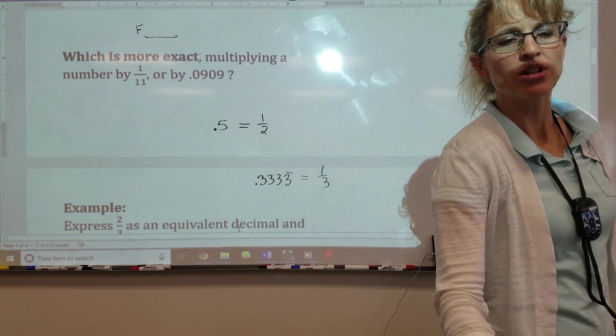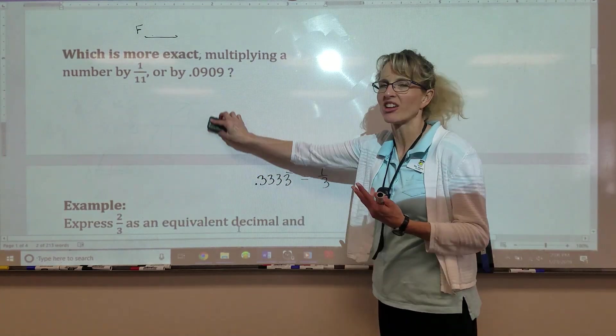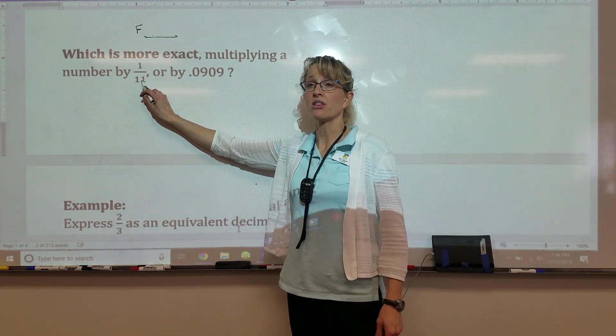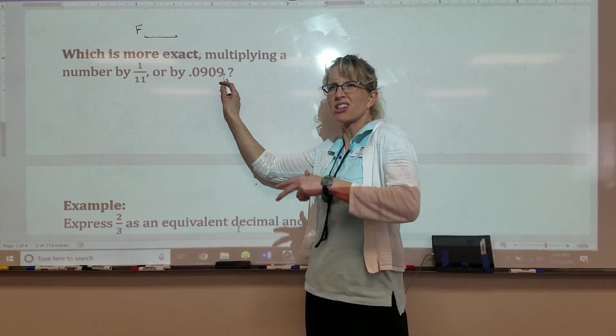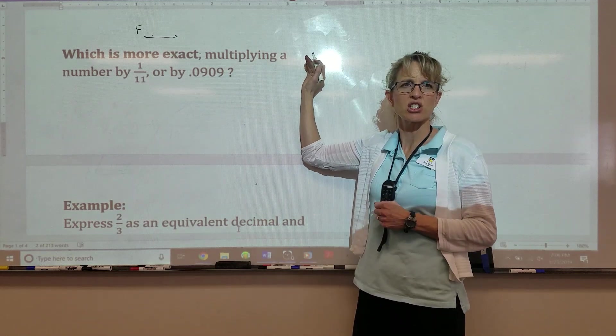So if you were designing a rocket booster for the space shuttle and human lives were dependent on your calculation, would it be more accurate if you used 1 eleventh in your calculation? Or 0.0909, which is close to 1 eleventh. You've just rounded because you didn't want to write all those extra digits.